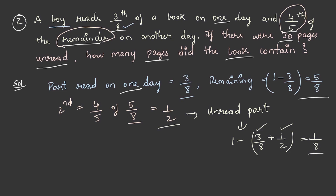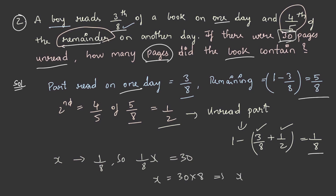Now, he is asking us to find out the number of pages in the book. So let us take it as x, and the unread part is 1 by 8. So 1 by 8 of x is equal to 30, because he has given that there are 30 unread pages. On equating this, we get x is equal to 30 into 8, so finally we get x is equal to 240. Therefore the book contains 240 pages.